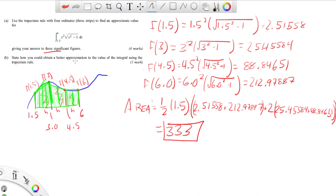So for part b, when it says how can you obtain a better approximation, if we increase the number of ordinates, we're going to improve this value, we're going to make it more accurate. And for us, for right now, that's it. That's all they want.